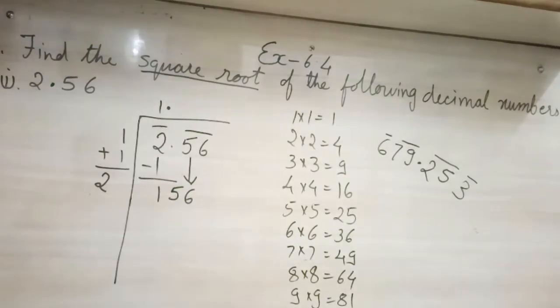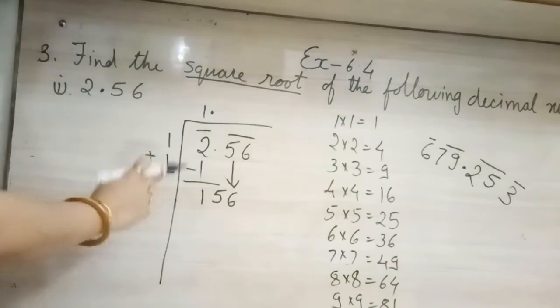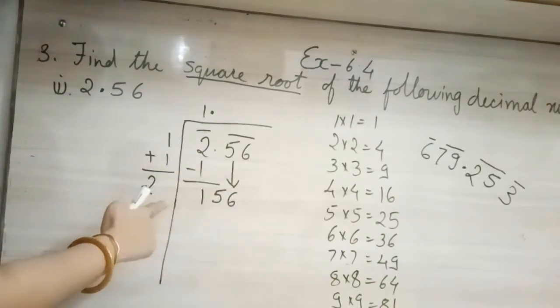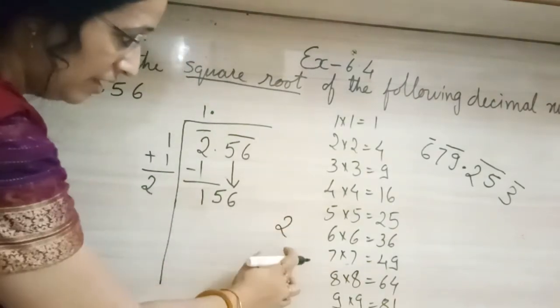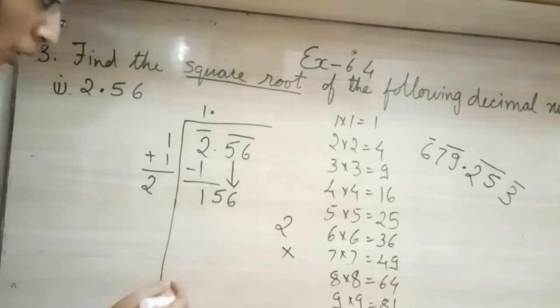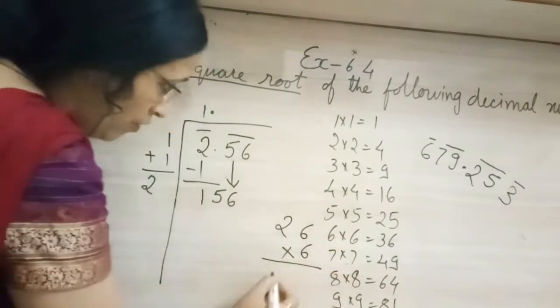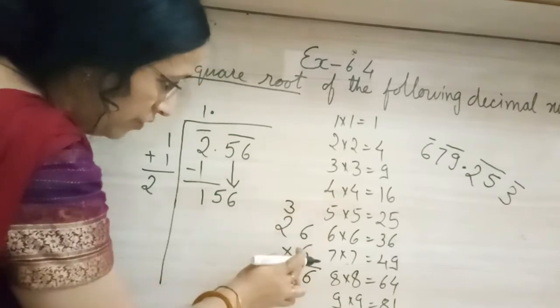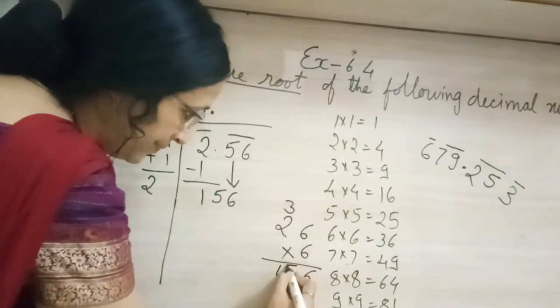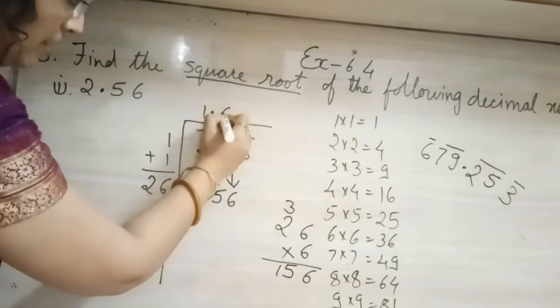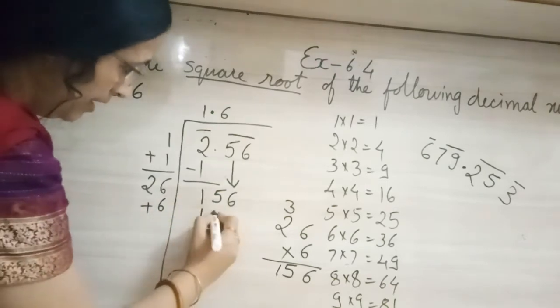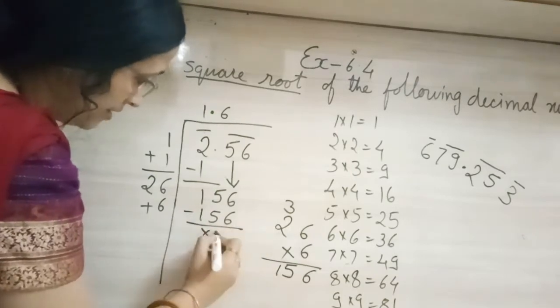So now what will come here? Again we will be doing the same method. We will take 6 and we will multiply it by 6. So what will come? 6 times 6 is 36, 6, 3 carry over. 6, 2 times 2 is 12, 12 plus 3 is 15. So how many? It is going 6 times. So 6 will come here, plus 6 will be here. And here it will come 156. And we will subtract. Remainder is 0.